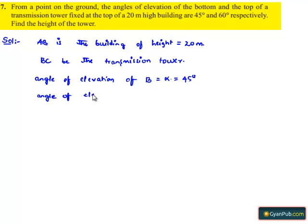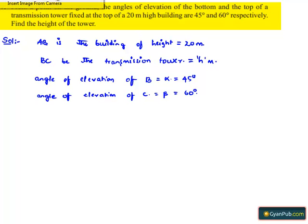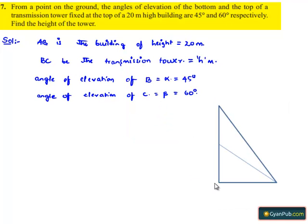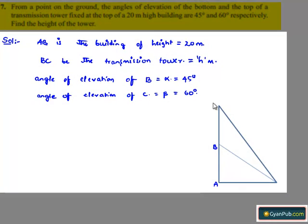The angle of elevation of the top of the tower, that is point C, is beta, which is equal to 60 degrees. We need to find the height of the tower, that is BC, let it be H meters. Let us represent the above information in the form of a figure as shown. Here AB is the building and BC is the tower. The observation point is at point P. The angle of elevation of point B from P is alpha, and the angle of elevation of point C from P is beta. The AB value is given as 20 meters.